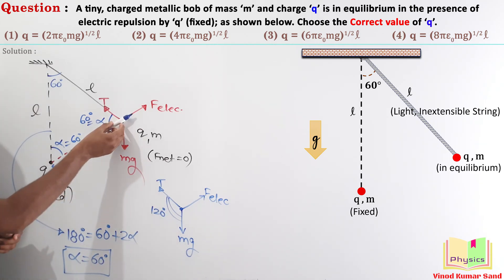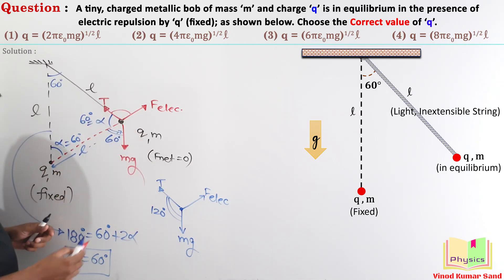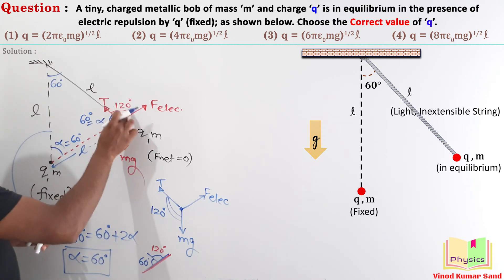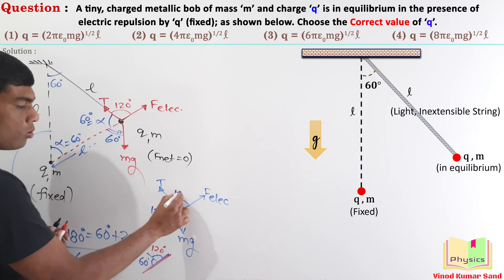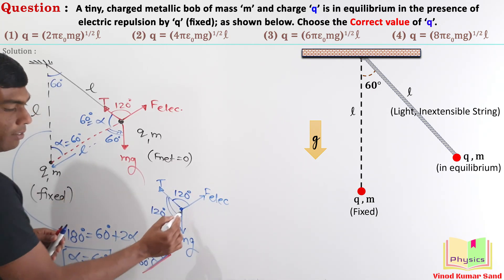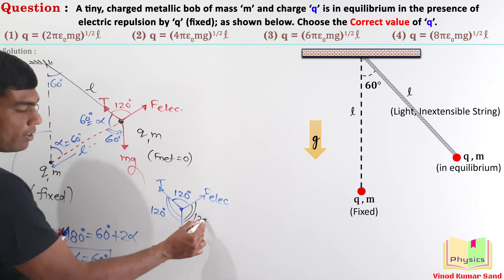Now, look at this straight line. If this angle is 60 degree, what is the angle here? It should be 120 degree. That is pretty simple. If this is a straight line, angle here is 60 degree, then everyone knows that this remaining angle will be 120 degree because the total angle here should be 180 degree. The angle between the tension and the electric force is also 120 degree. So, the remaining angle directly we can say should also be 120 degree.